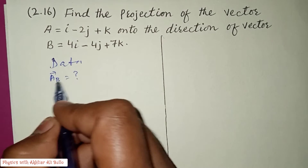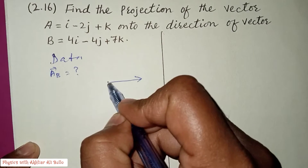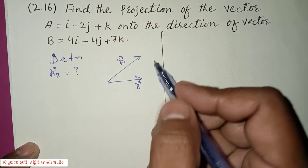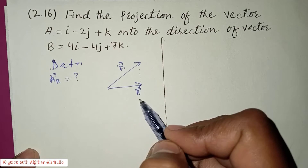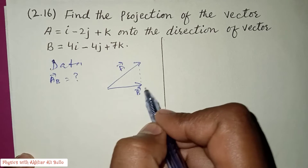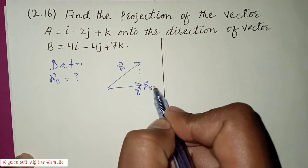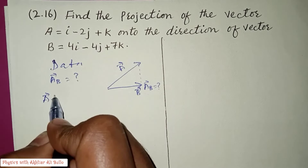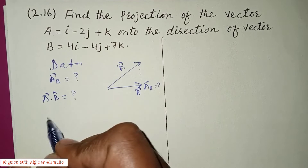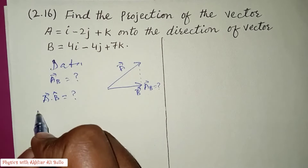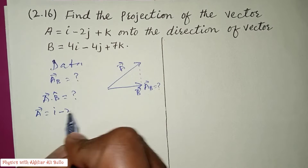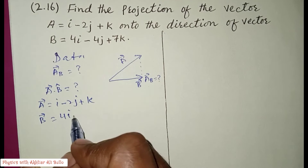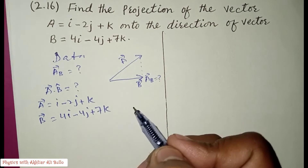The projection is given graphically: this is vector a and this is vector b. The projection of vector a on the direction of vector b is equal to a dot b-unit-vector. The value of vector a is i minus 2j plus k, and the value of vector b is 4i minus 4j plus 7k.